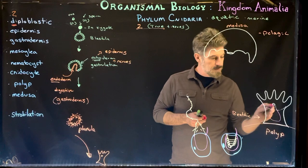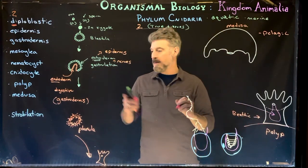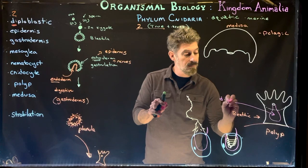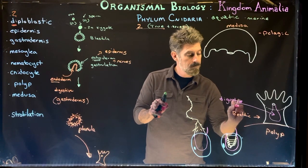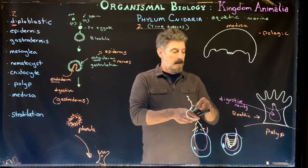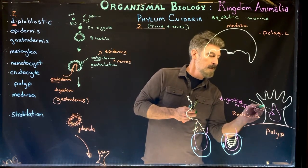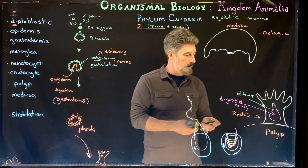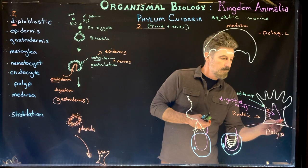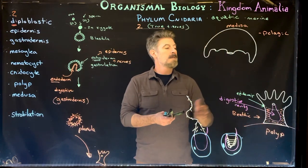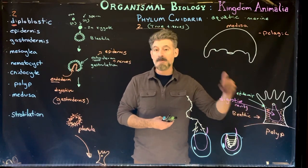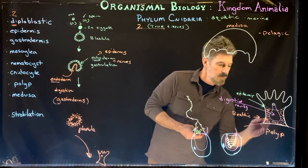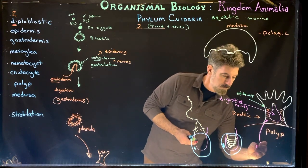A polyp has a mouth and a digestive cavity. The endoderm forms the gastrodermis, and that gastrodermis lines the digestive cavity. The epidermis surrounds the outside. Between the digestive cavity — lined with gastrodermal cells — and the epidermis is another gel-like region called the mesoglia.